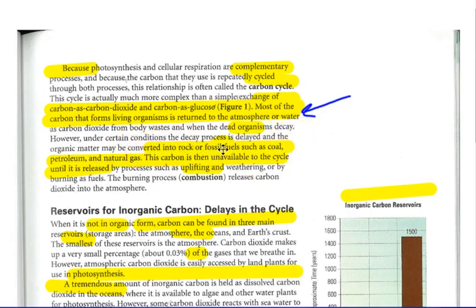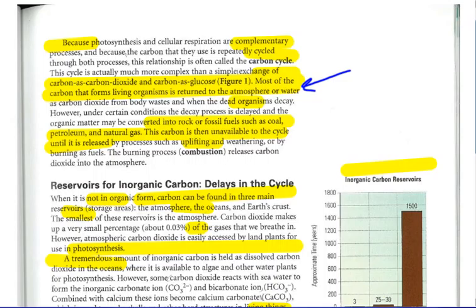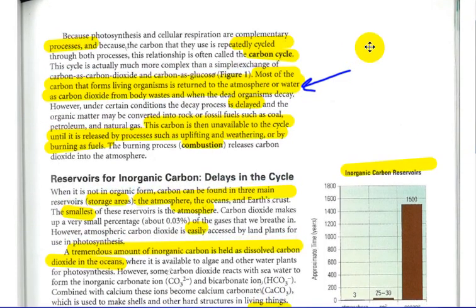However, under certain conditions, the decay process could be delayed, in which it's converted into rock or fossil fuels, such as coal, petroleum, and natural gas. The carbon is then unavailable with cycle until it is released again by processing, such as uplifting and weathering. So if a mammal gets caught underground, that cycle may not quite happen as quickly.